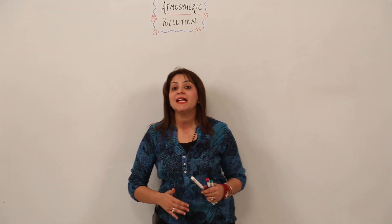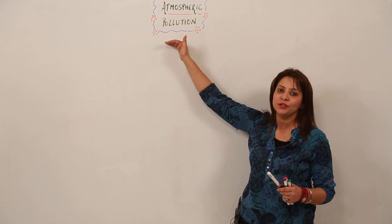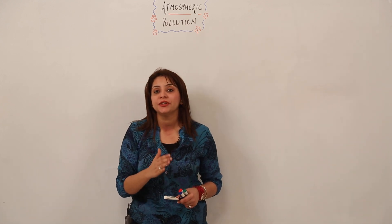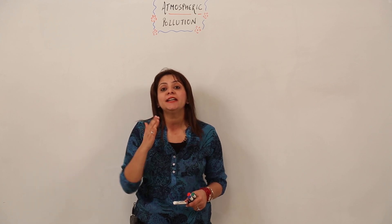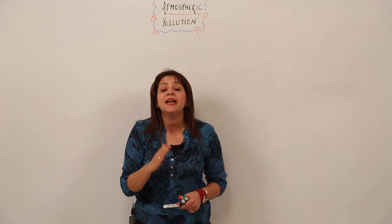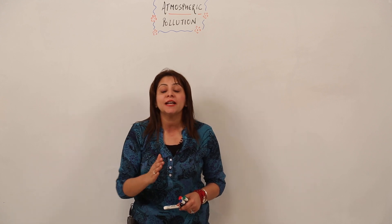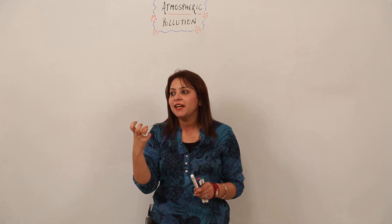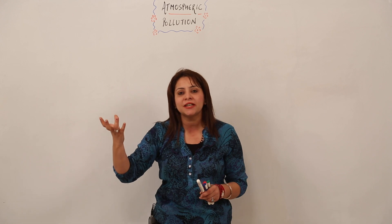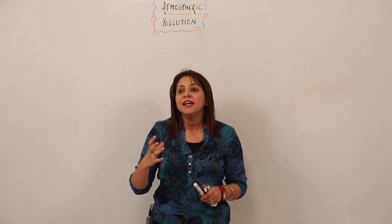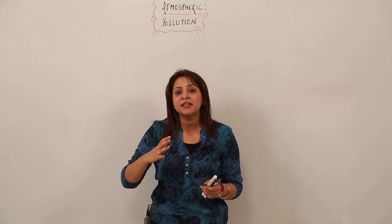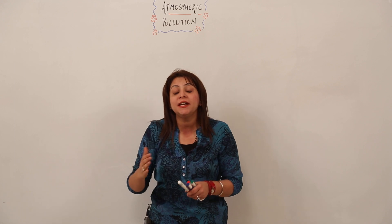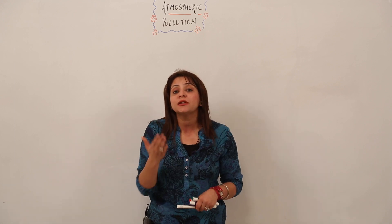We are starting with the topic of atmospheric pollution. Atmospheric pollution is the contamination of air with undesirable and harmful substances. The air around us is not clean — it contains certain dust, pollen grains, and many other things which should not be present in the air. These substances are not desirable and are in fact harmful to us.